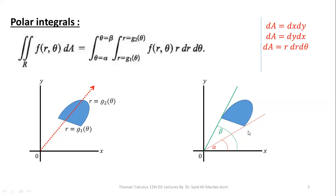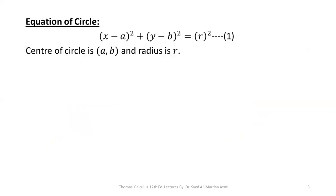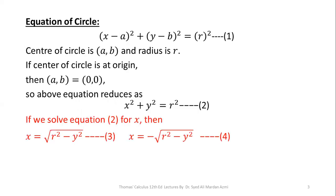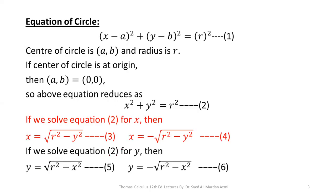After knowing these things, we must know the equation of a circle in general form. This is the general form of the equation of a circle with center at (a, b) and radius r. If we take a = b = 0, meaning we shift the center to the origin, then the equation reduces to x² + y² = r². If we solve this equation for x, we get equations 3 and 4, and if we solve it for y, we get equations 5 and 6.